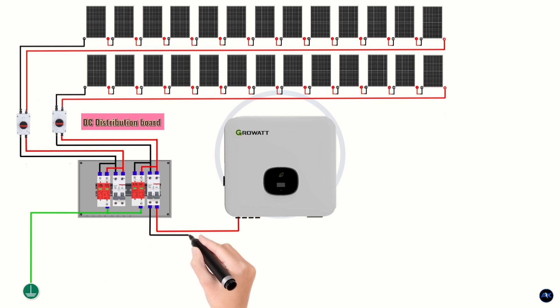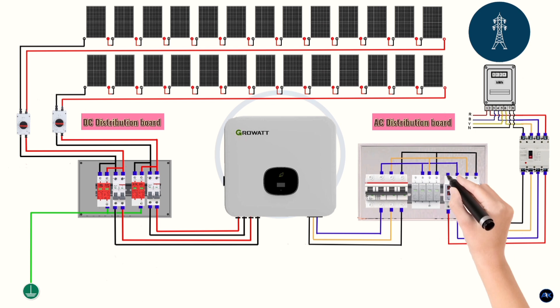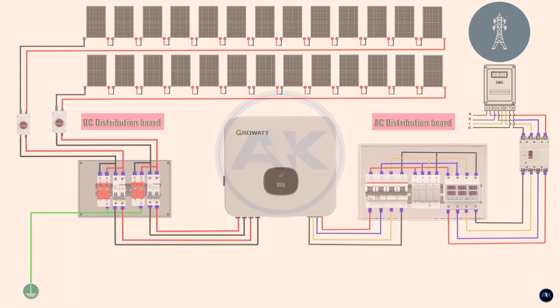By the end, you'll have a clear understanding of how these systems work and how they're installed. A 10kW solar system is a significant investment, but it can drastically reduce your electricity bills and your carbon footprint. Let's break down the installation process step by step.